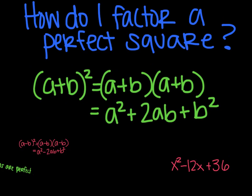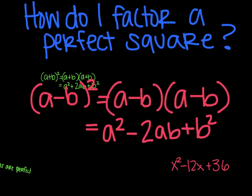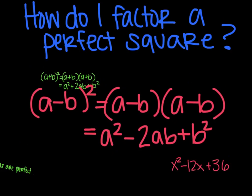So (a+b)² is really (a+b) times (a+b), and that ends up being a²+2ab+b². If you are subtracting, you will have (a-b)², which is (a-b) times (a-b), and you get a²-2ab+b².